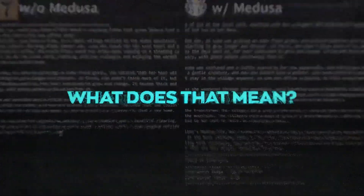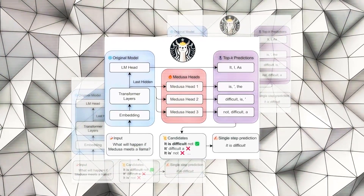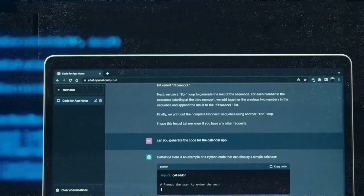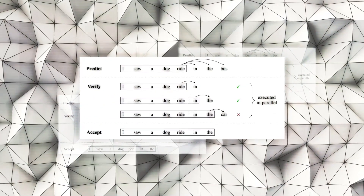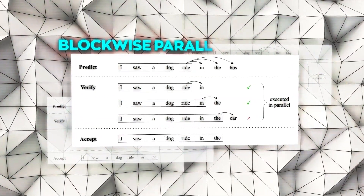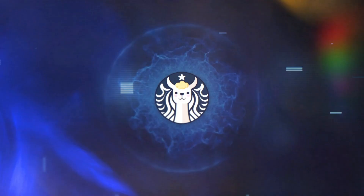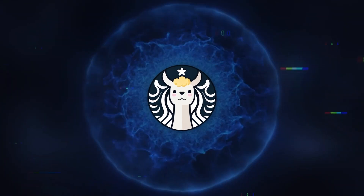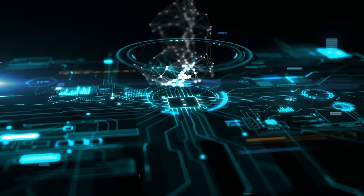The basic idea of Medusa is to make predictions for multiple future tokens at the same time, instead of just the next one. This way, you can generate more text in parallel and reduce the number of iterations needed to complete a sequence. This technique is inspired by blockwise parallel decoding, which is a method used to speed up autoregressive models in general. But Medusa is not just a simple implementation of blockwise parallel decoding — it also has some innovative features that make it even more powerful and flexible.